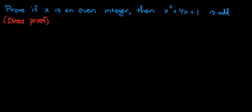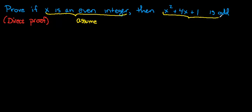For a direct proof, what we want to do is assume everything between the 'if' and the 'then' — this is called our hypothesis, and this is what we will start off assuming. What we want to conclude is the consequence, everything that comes after the 'then' statement. So we will assume x is an even integer, and what we need to show is that x squared plus 4x plus 1 is odd.